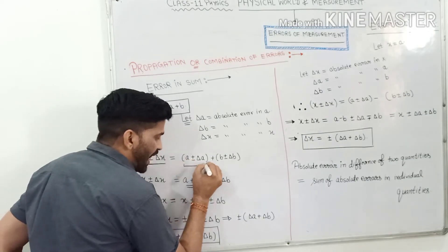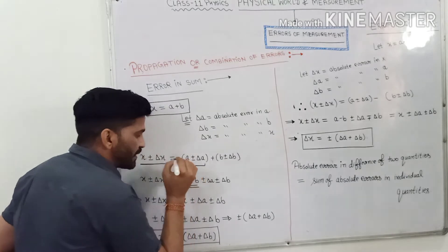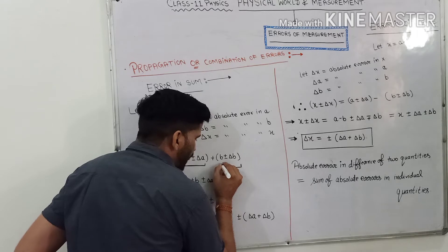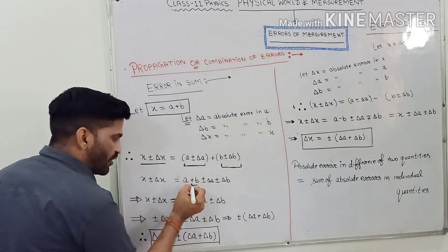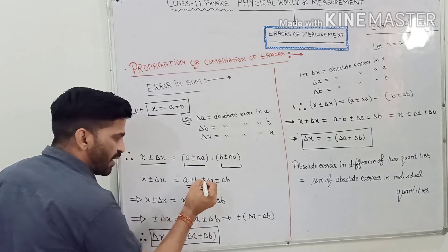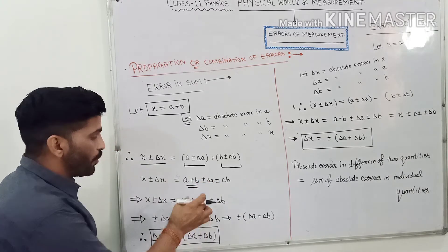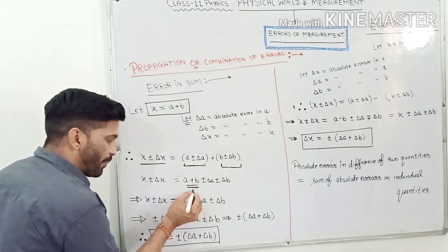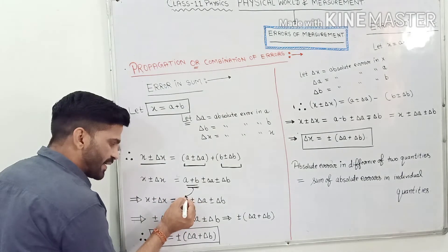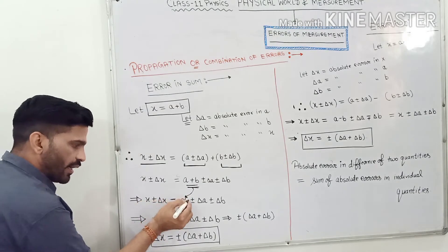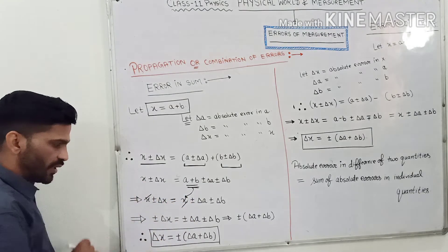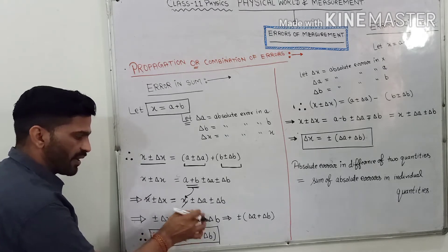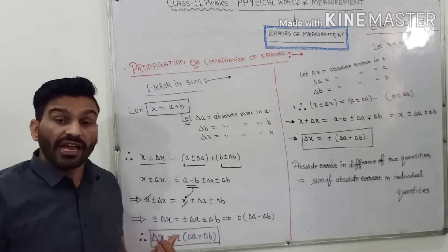The error in a was delta a, so I write a plus minus delta a. Similarly for b: b plus minus delta b. Taking b outside, we are left with a plus b plus minus delta a plus minus delta b. Now you know that x is equal to a plus b, so a plus b is replaced by x. Then x cancels with x and we are left with plus minus delta x equal to plus minus delta a plus minus delta b.